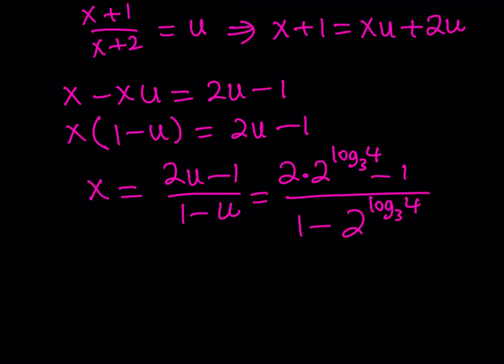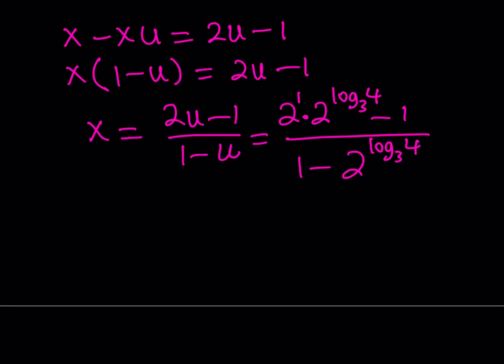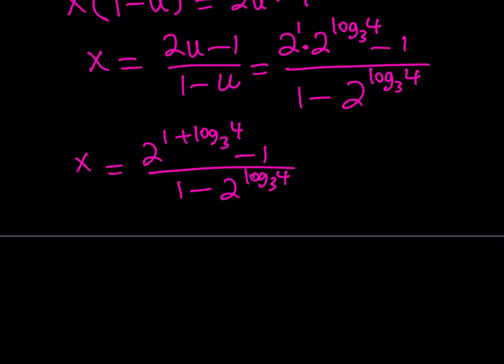Now this can be simplified a little bit. Let's go ahead and do it. Consider that this is 2 to the power 1 and when you multiply two powers you add the exponents. So when you add the exponents you get something like this: x equals 2 to the power 1 plus log 4 base 3 minus 1 over the denominator. Denominator is not really going to change much because we have 2 to the power something. I can't really do much about it but here notice that we have a 1 but 1 can always be written as log 3 base 3.